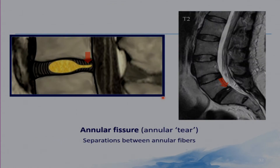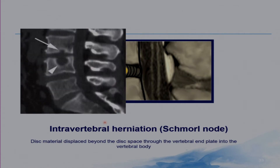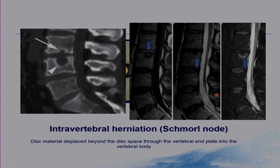An annular fissure is separation between annular fibres — the term annular tear is best avoided. Intervertebral disc herniation, or Schmorl's node, is disc material displaced beyond the disc space through the vertebral end plate into the vertebral body. This CT and this MRI show intervertebral disc herniation.